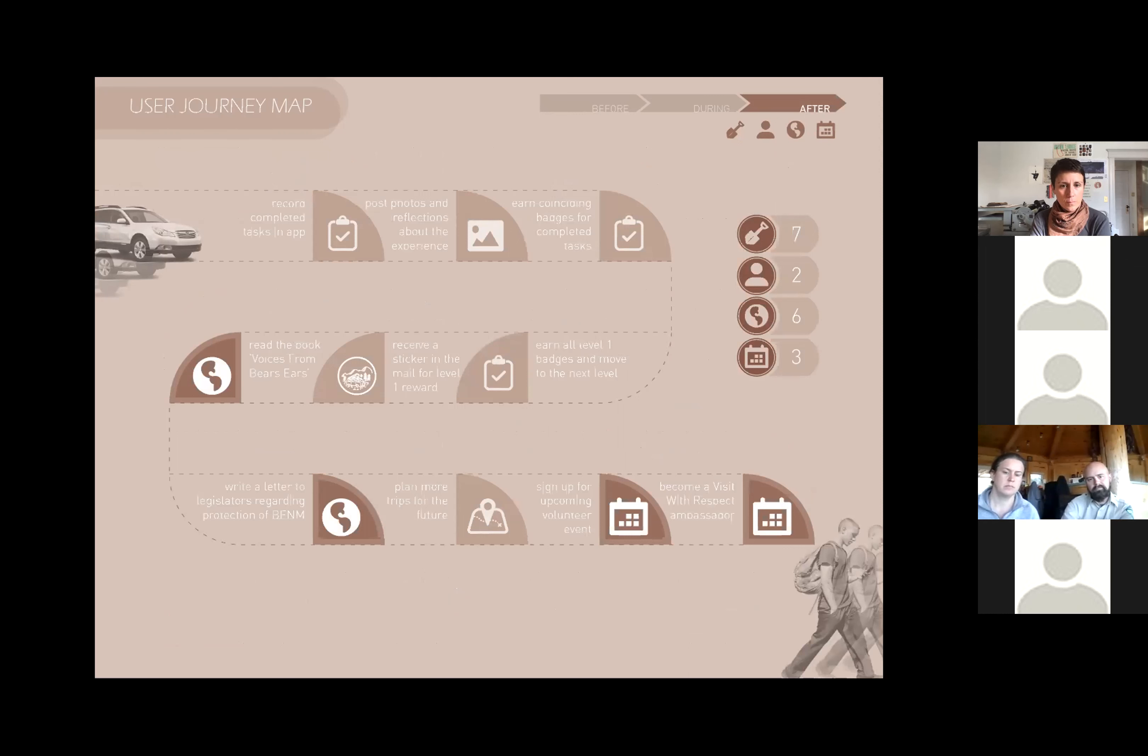He moves to level two and receives an ecokeeping sticker in the mail for his stewardship. He then reads another book about Bears Ears and feels compelled to write a letter to legislators regarding the protection of Bears Ears National Monument. Next, he starts to plan another trip, signs up for some upcoming volunteer events, and starts the process of becoming a Visit with Respect ambassador.